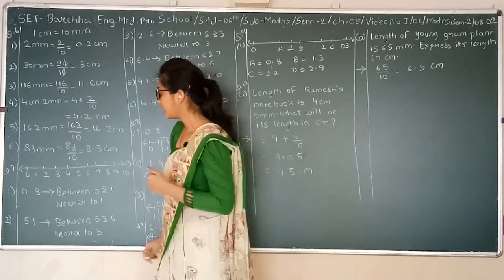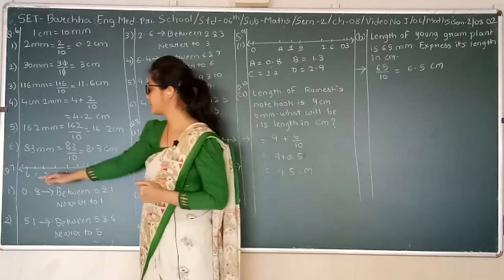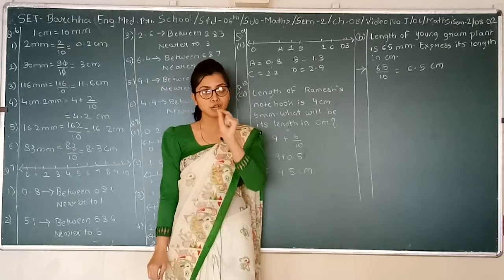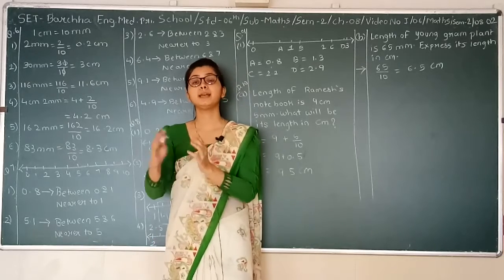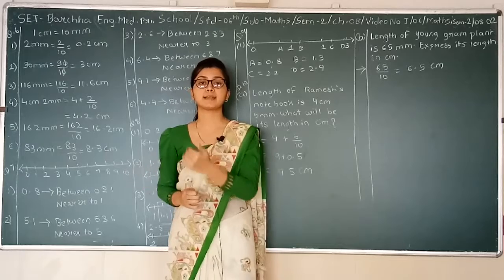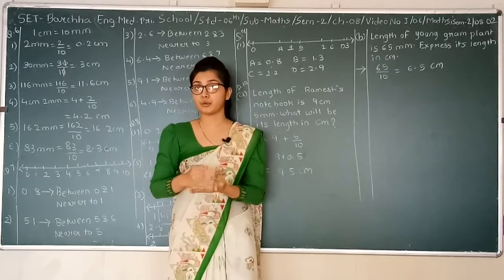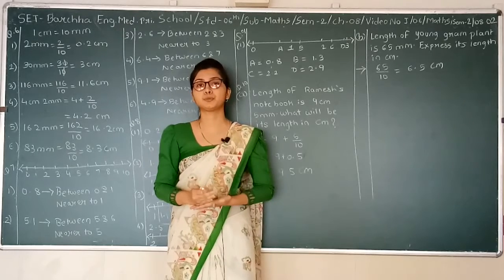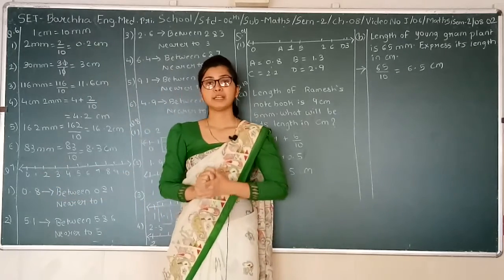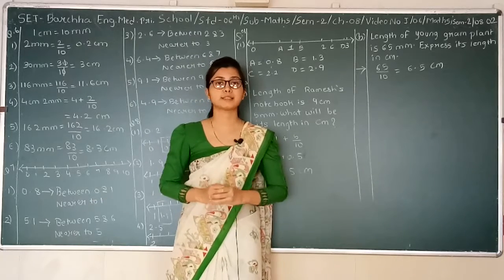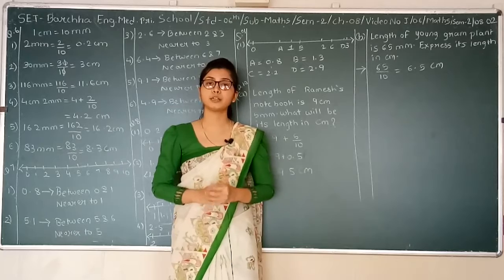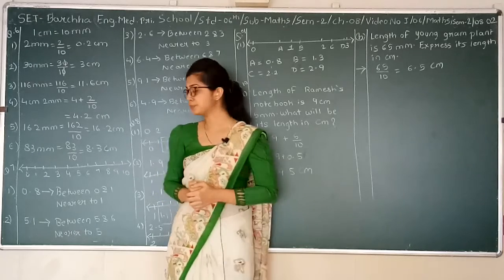Question number 7. We have numbers from 0 to 10. You can see on your ruler that there are small marks between whole numbers — 0 to 1, 1 to 2, 2 to 3, and so on. These marks represent 0.1, 0.2, 0.3, 0.4, 0.5, 0.6, and so on. After 1 it will be 1.1, 1.2; after 2 it will be 2.1, 2.2, 2.3. We have to find between which two whole numbers each decimal falls, and which whole number it is closer to.